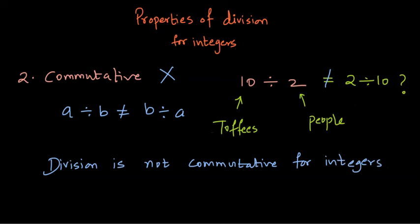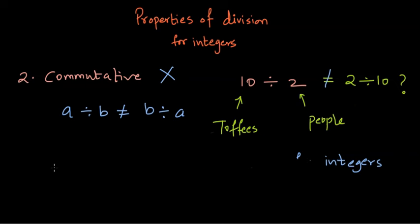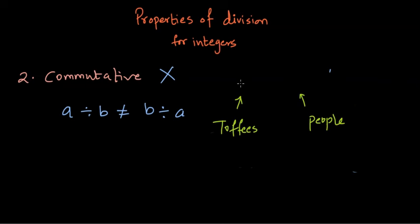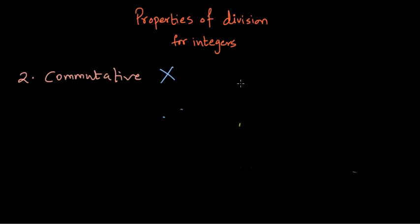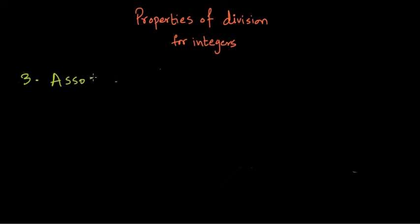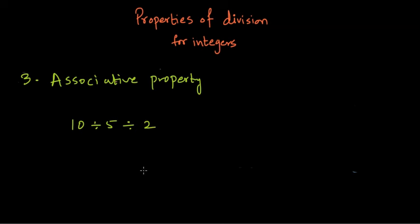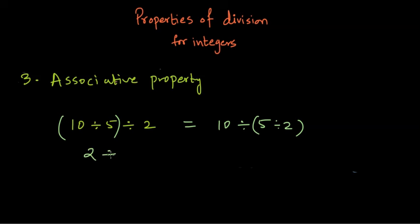There is another property called the associative property, which is an extension of this idea for division. In associative property, we choose three numbers — for example, 10 divided by 5 divided by 2. We use brackets: (10 ÷ 5) ÷ 2 equals 2 ÷ 2, which gives 1. But 10 ÷ (5 ÷ 2) equals 10 ÷ 2.5, which gives 4. These two results are not equal.